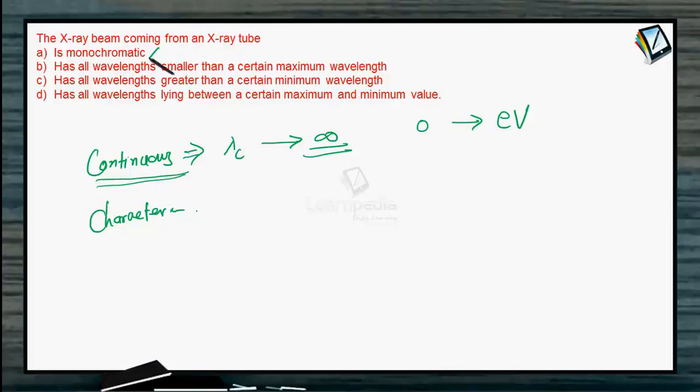That means the x-ray beam coming from an x-ray tube is monochromatic? No. Has all wavelengths smaller than a certain wavelength? No, it is not the case. Has all wavelengths greater than a certain minimum wavelength? Yes, because this is the concept of cutoff wavelength.